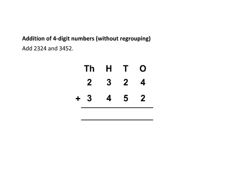First, arrange numbers in the column form. Then, by adding digits at 1's place, we get 4 plus 2 is equal to 6.